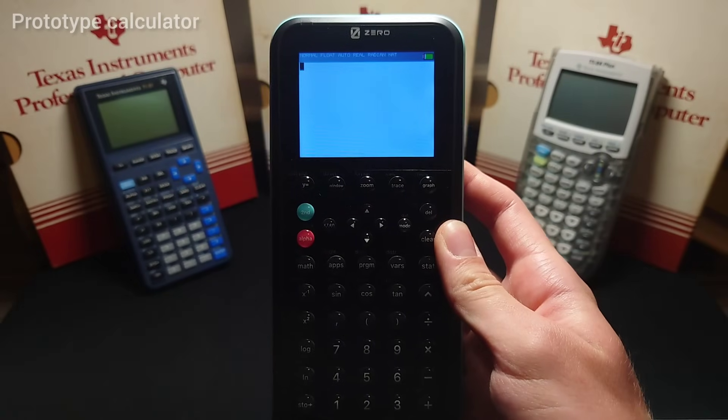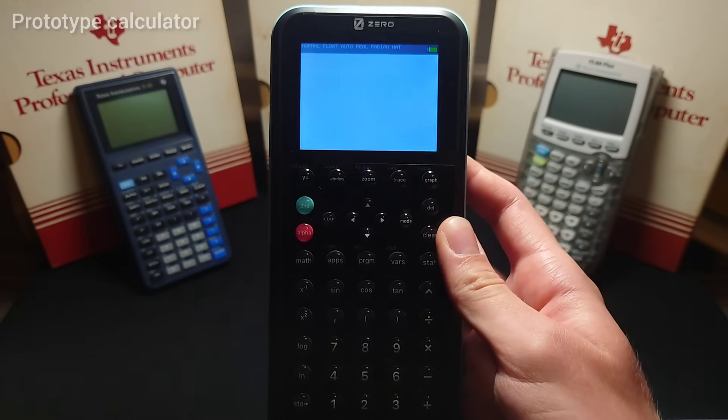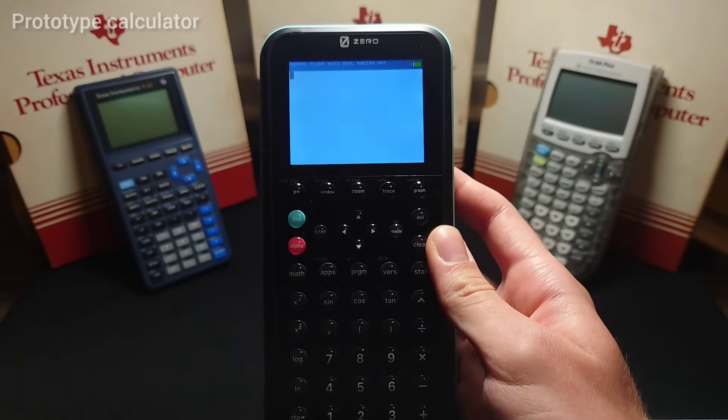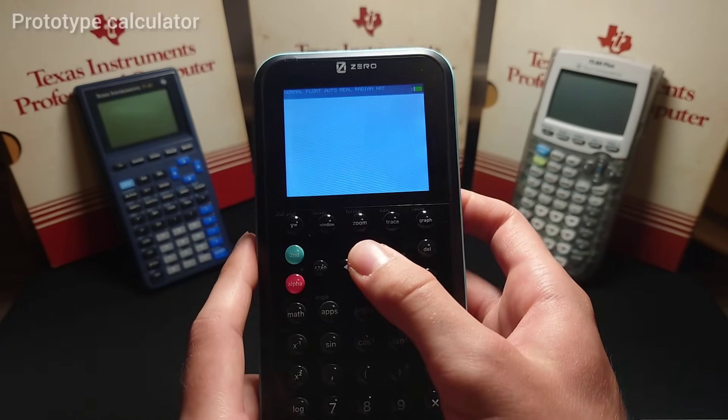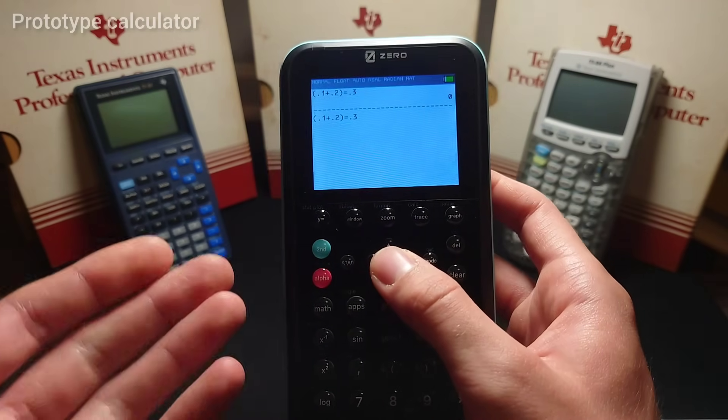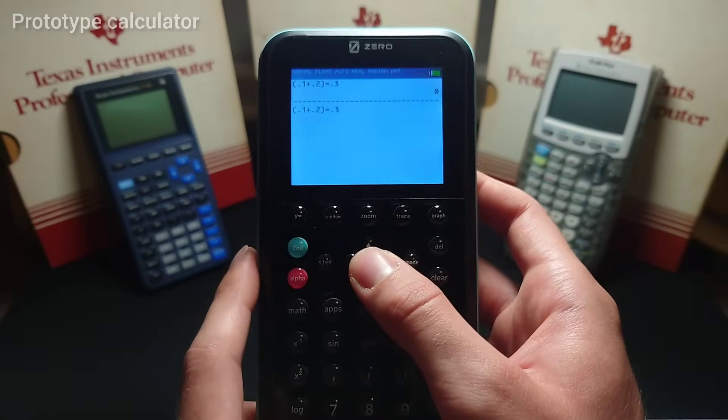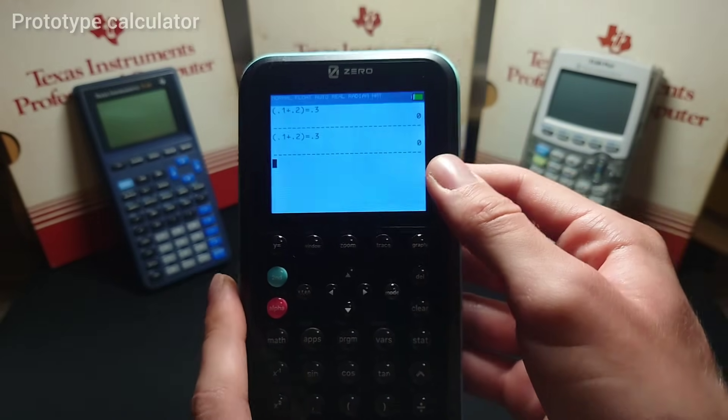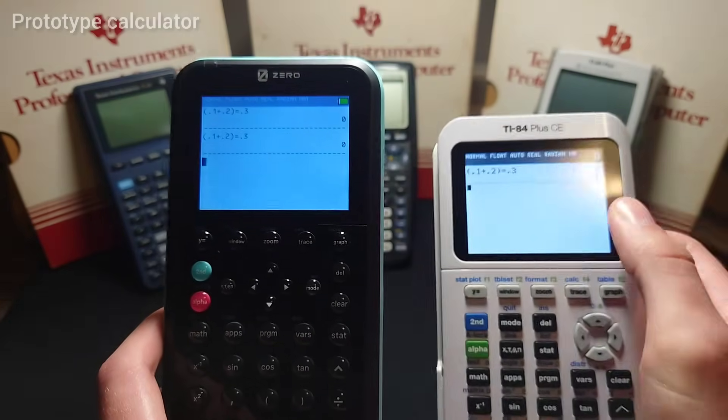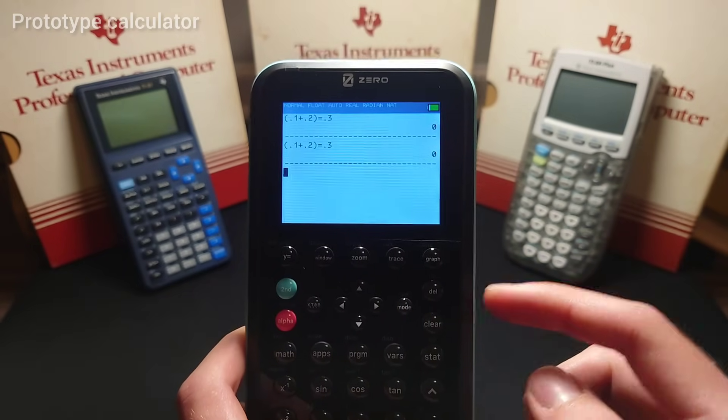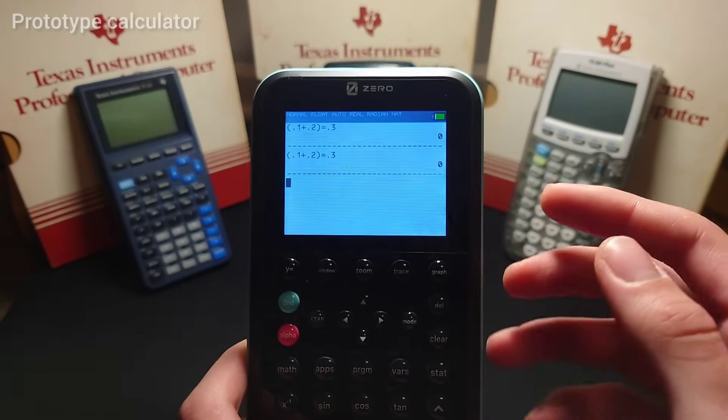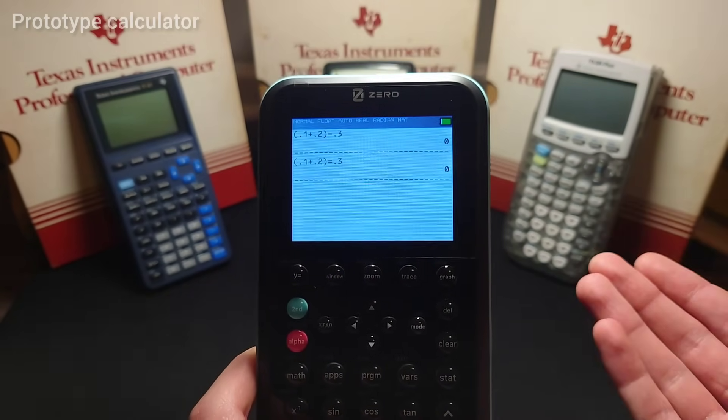Now I'm not going to hate on prototype clearly unfinished software too much. However, there are some fundamental flaws with the calculator currently. For example, if I check if 0.1 plus 0.2 equals 0.3, the calculator says no, it does not, which is clearly incorrect. And the TI-84 plus CE does show the correct answer. Now this is a software bug, and it can be fixed. However, it is concerning to see on a calculator.